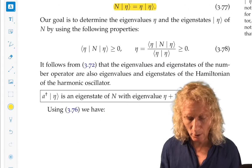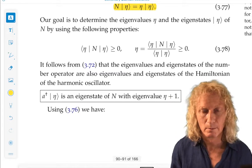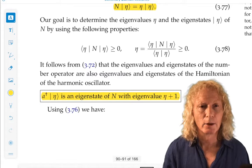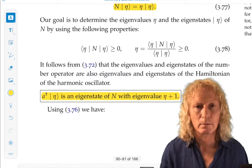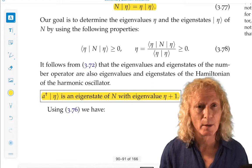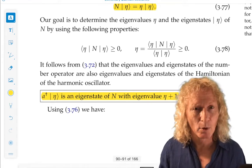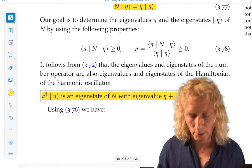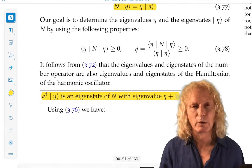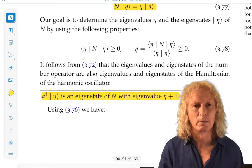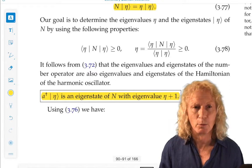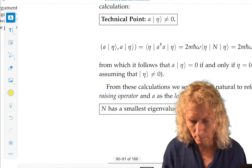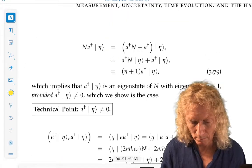We left off with this statement here. A dagger acting on ket eta is an eigenstate of the number operator, but with eigenvalue eta plus one. So this is where the raising operator notation comes in. If somebody says, here's an eigenstate of this equation, what do you do? You plug it in and see what you get.